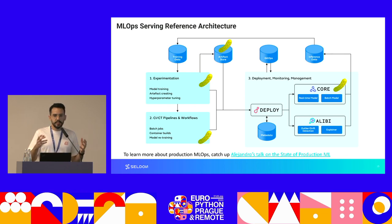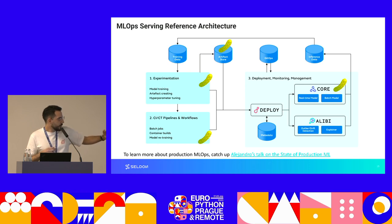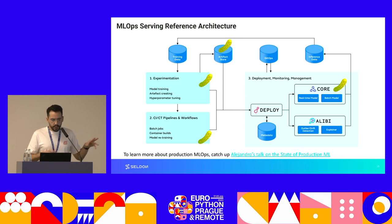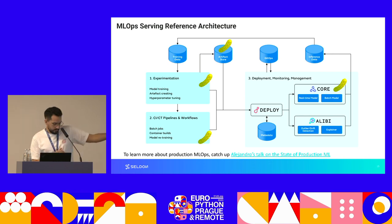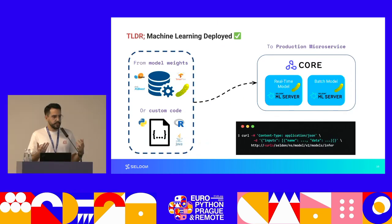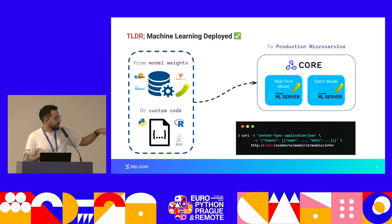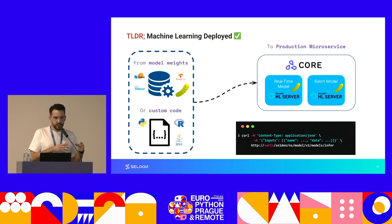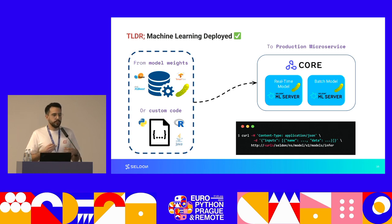A set of CI pipelines will then deploy that artifact into your serving infrastructure. The pickle eventually makes it to a real-time model, which is generally a microservice running some kind of inference server. In our demo we'll use ML server, which is an open source inference server. You eventually serve your model into a microservice and expose a REST API or gRPC API to run real-time inference. Sometimes this is also accompanied by custom code alongside the model weights, which opens its own set of issues.